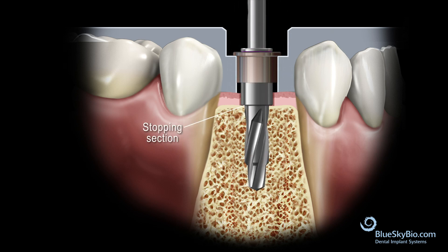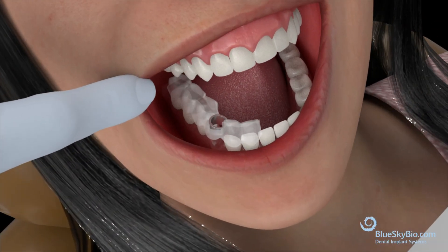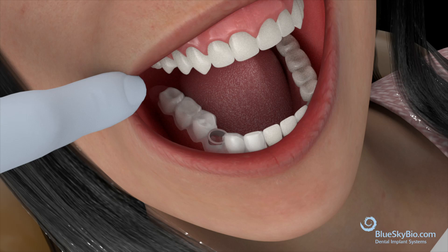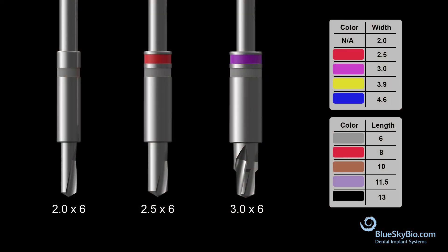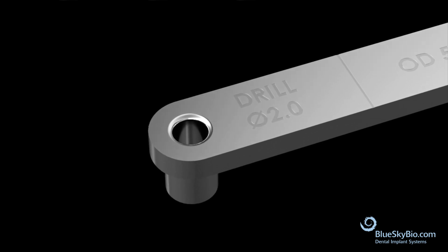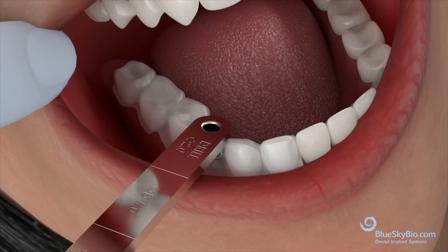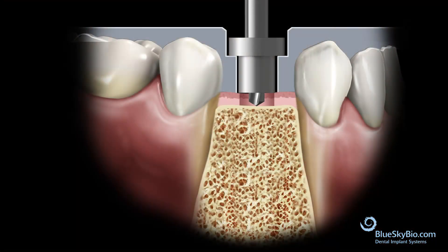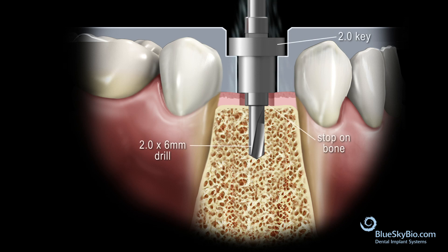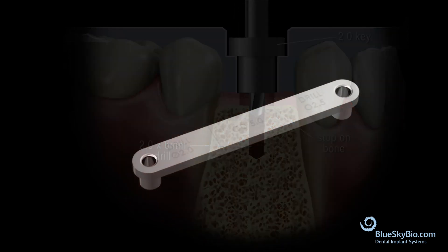The stopping portion of the drill will limit the penetration. We will be showing how to place a 3.5 diameter by 10 millimeter long implant. Verify fit of guide. Starting from left, the sequence is: 2.0 by 6, 2.5 by 6, 3.0 by 6. The 2.0 by 6 millimeter drill will use the 2.0 side of the OD 5 millimeter key. Place the 2.0 side of the key in the guide and proceed with the 2.0 by 6 millimeter drill.